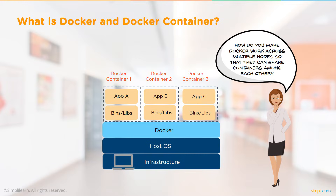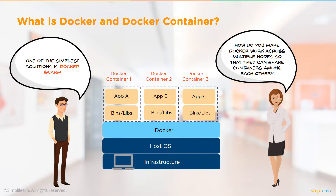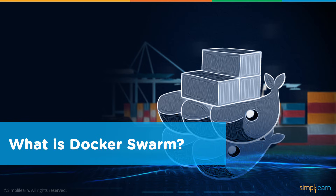One characteristic of Docker is that you can run multiple Docker environments on the same host. To do this effectively, we use what's called a Docker Swarm — an environment where you can have multiple Docker images running on the same host operating system, each container running a different solution. So let's dig into what a Docker Swarm is.